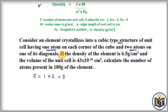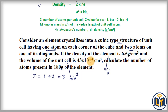The question states: if the density of the element is 6.5 gram per centimeter cube, and the volume of the unit cell is 43 multiplied by 10 to the power minus 24 centimeter cube, calculate the number of atoms present in 180 gram of the element.